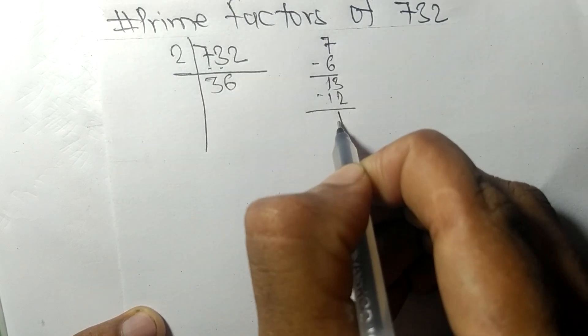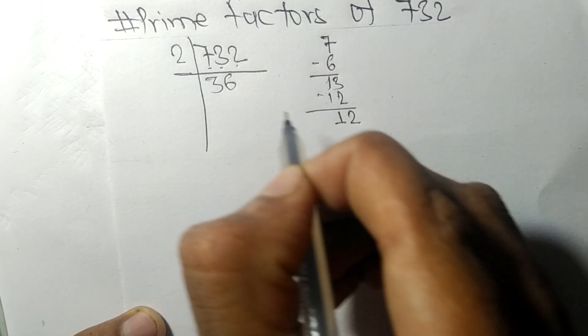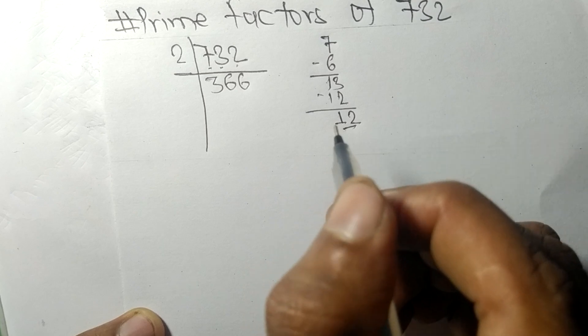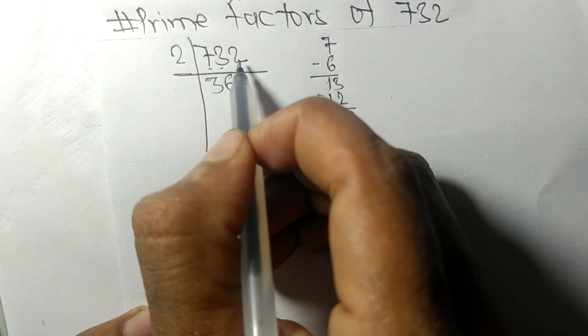On subtracting we get 1, and these two twos. Two times 6 means 12. So on dividing 732 by 2, we get 366.